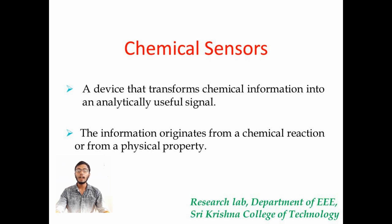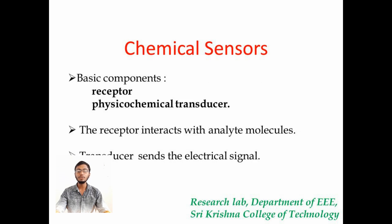It can have different applications. The applications may be in home appliances or in chemical industries. The chemical sensor usually contains two basic components: a chemical recognition system, a receptor, and a physicochemical transducer. The transducer is used to send the signals from a sensor.